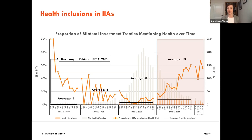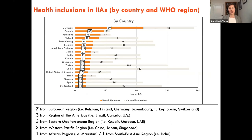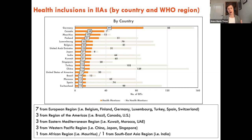One of the interesting findings was that there were significant health inclusions early on in the BIT universe, in the 1960s and 70s in particular — it was quite common for investment treaties to include mentions of health. This really dropped away during the 1970s and 80s and during the period around the Washington consensus and increasing globalisation, when we see significant increase in the number of investment treaties being signed, we actually see a really low proportion of those including any mention of health. This contrasts significantly with the more recent period where health inclusions have become more common — now about 50% of recent agreements include a mention of health.